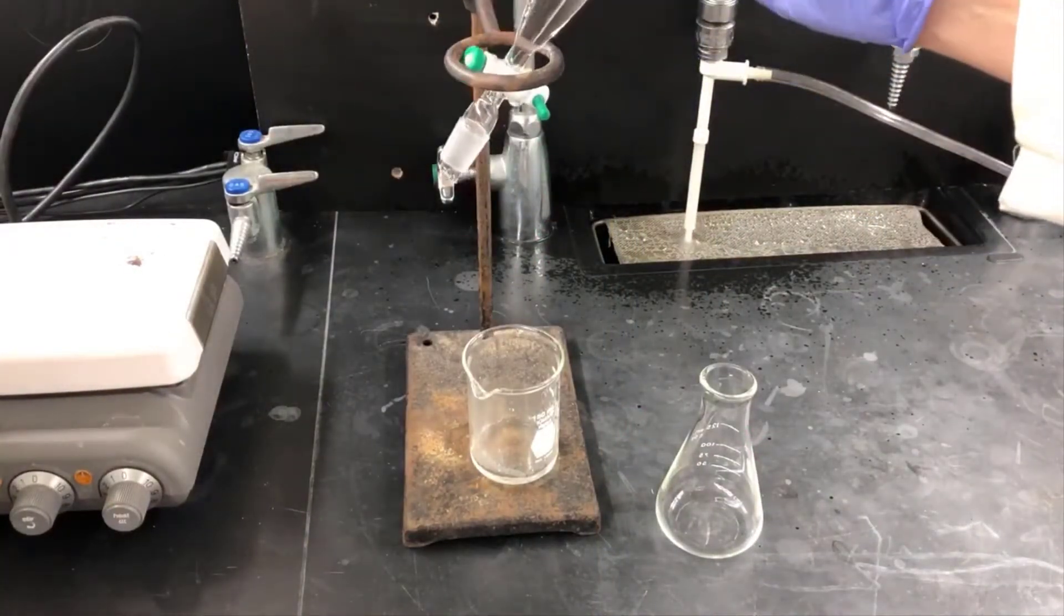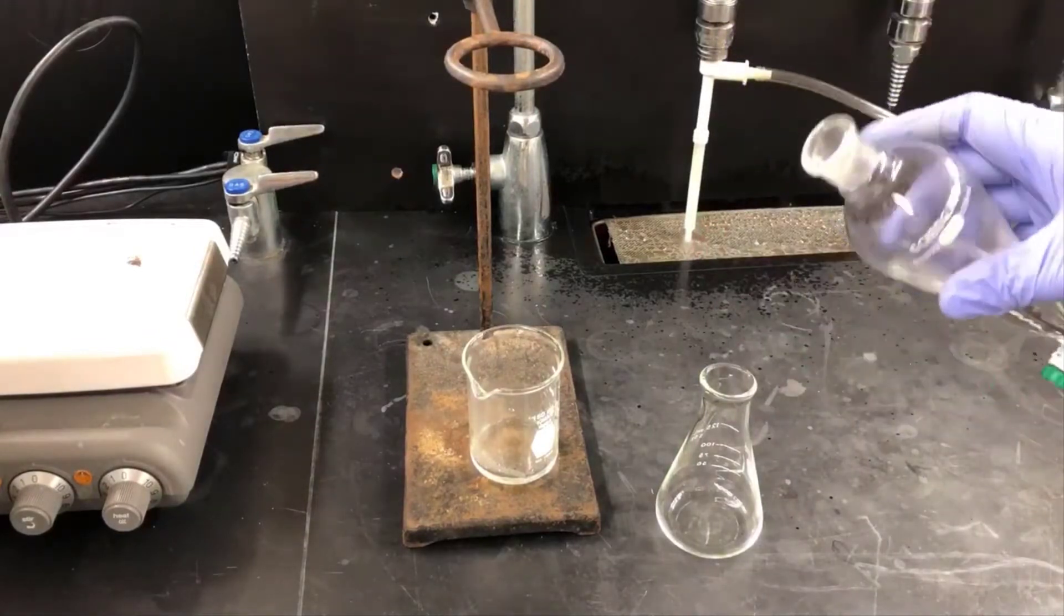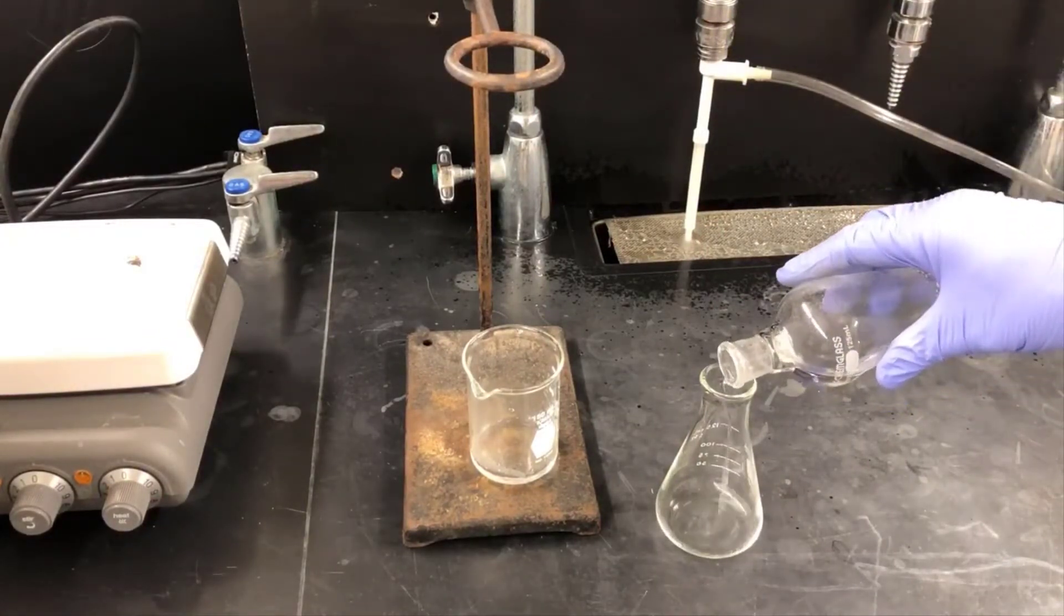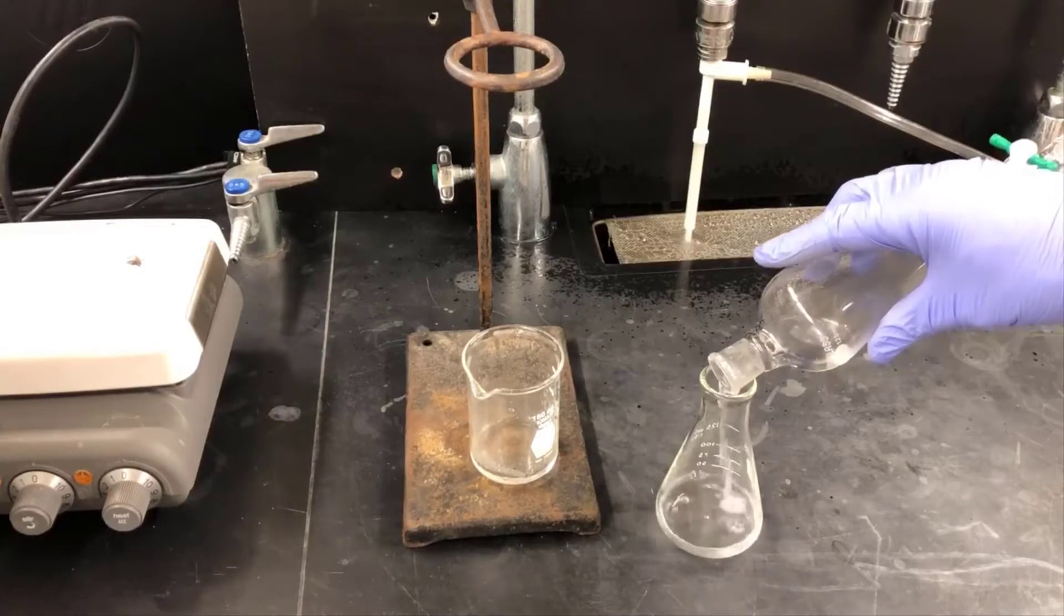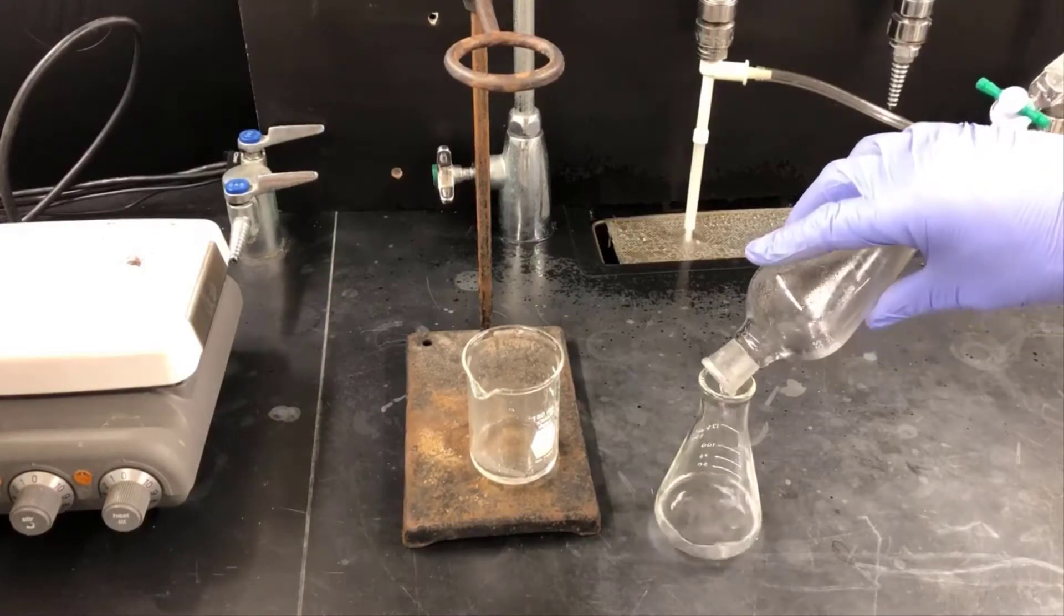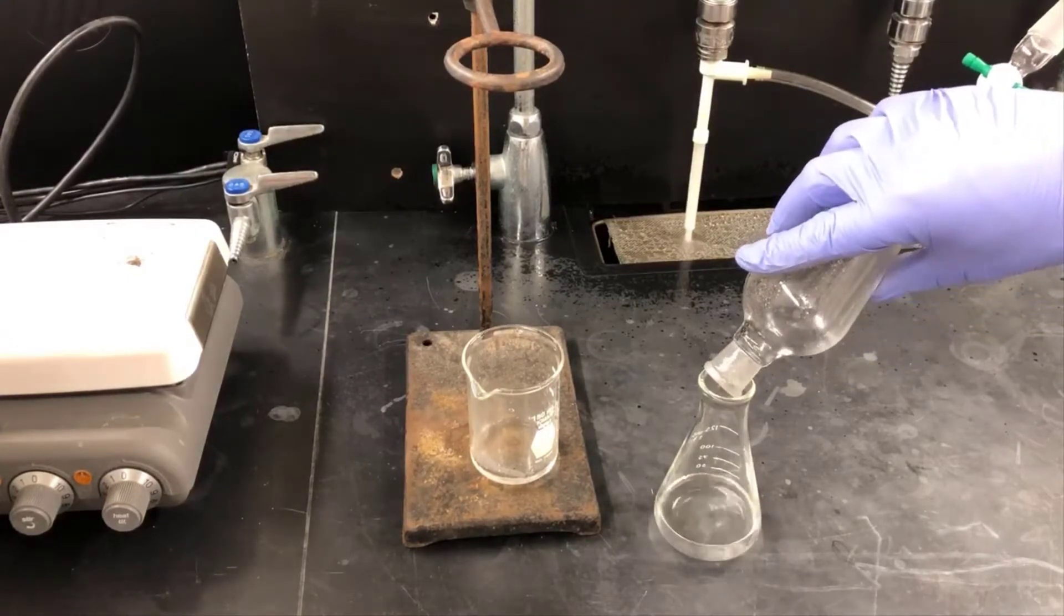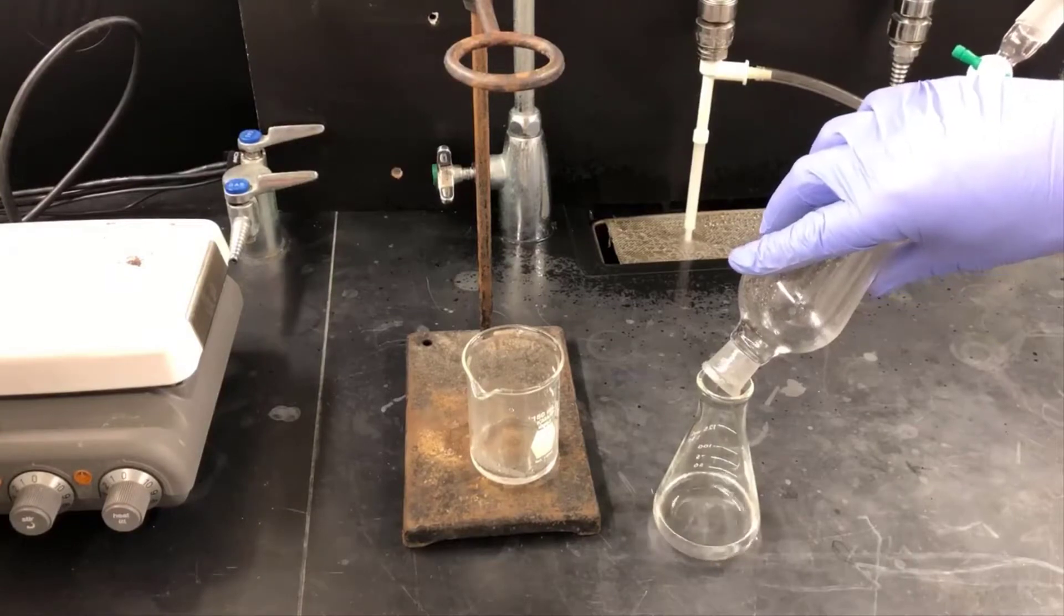Now I'm pouring the organic layer out the top of the separatory funnel into a clean-dry Erlenmeyer flask. It's better to pour the top layer out the top than to drain it out the bottom because the stopcock contains a little bit of water layer. You'll get a little bit of the aqueous layer, the brine layer, in your solution if you drain it out the bottom.